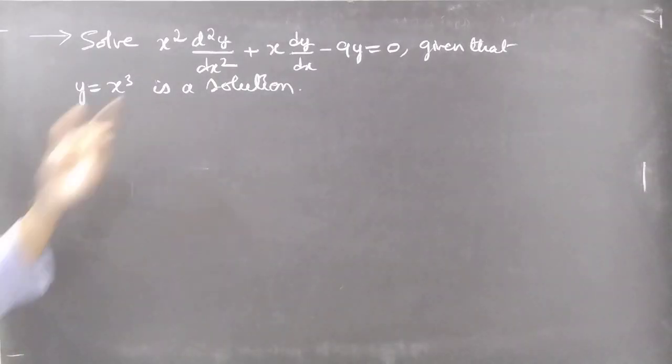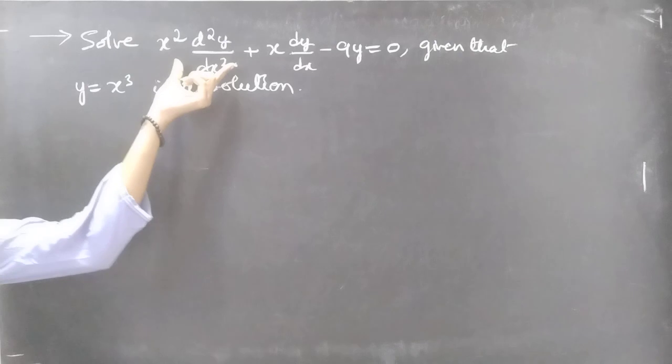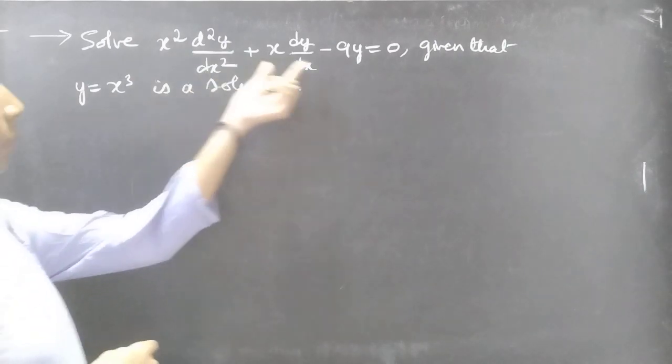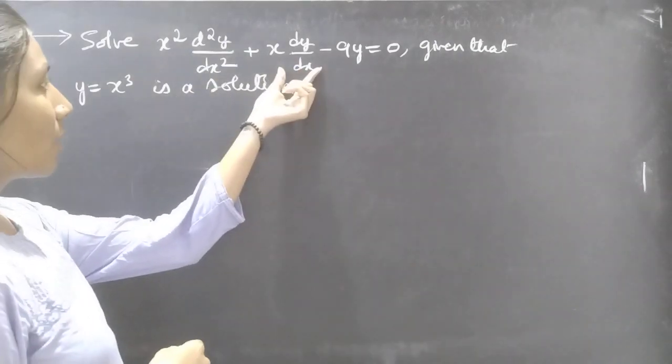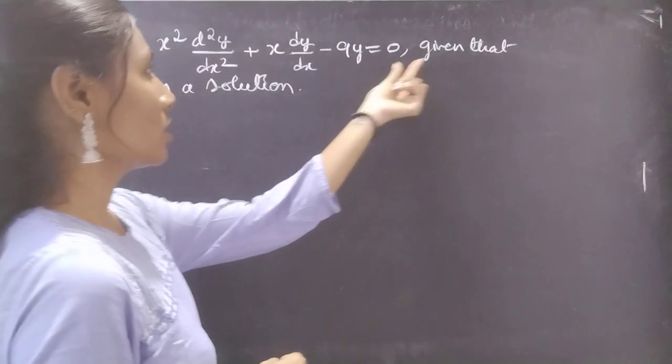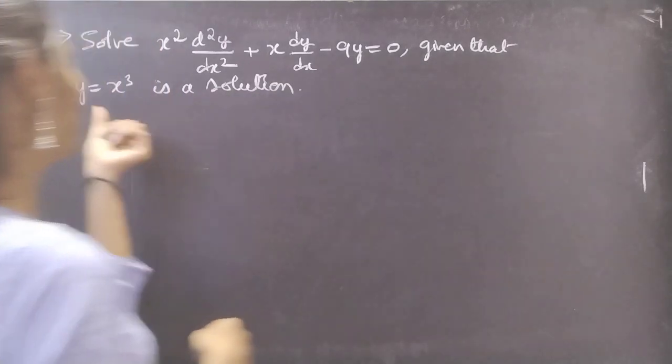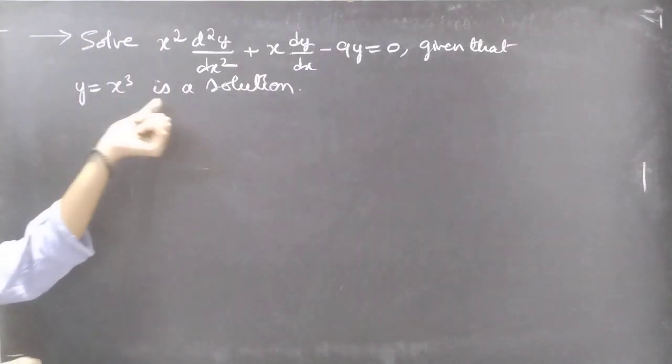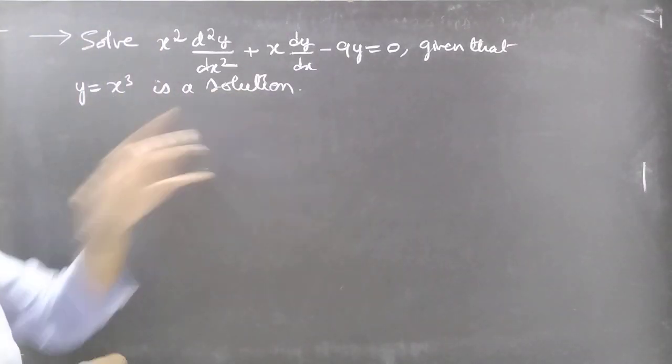Problem: Solve x² d²y/dx² + x dy/dx − 9y = 0, given that y = x³ is a solution.